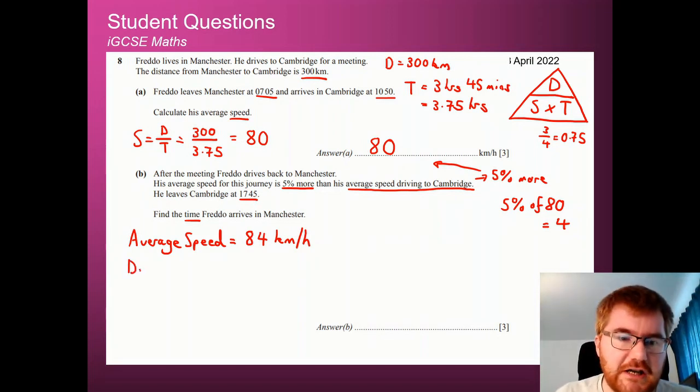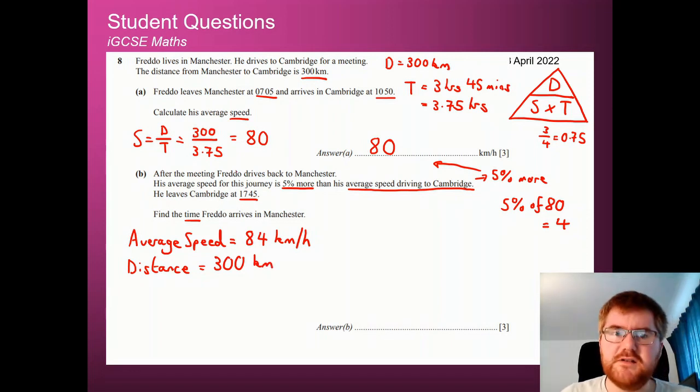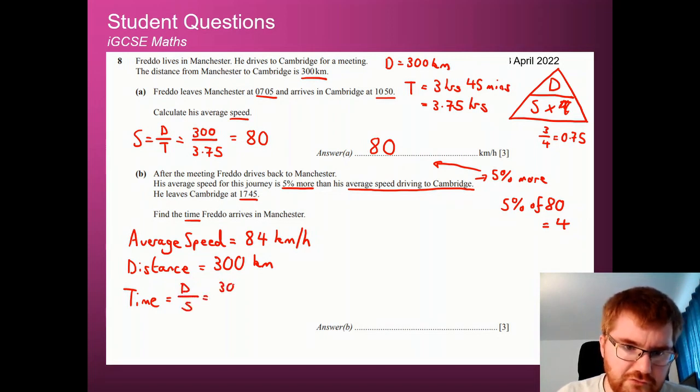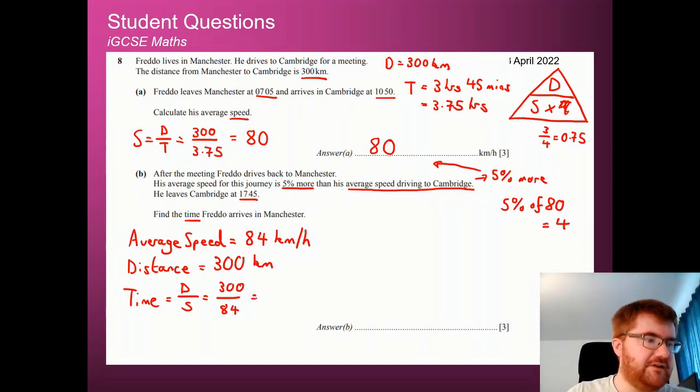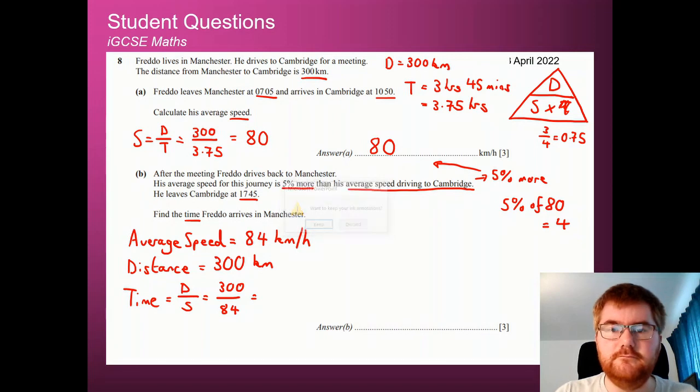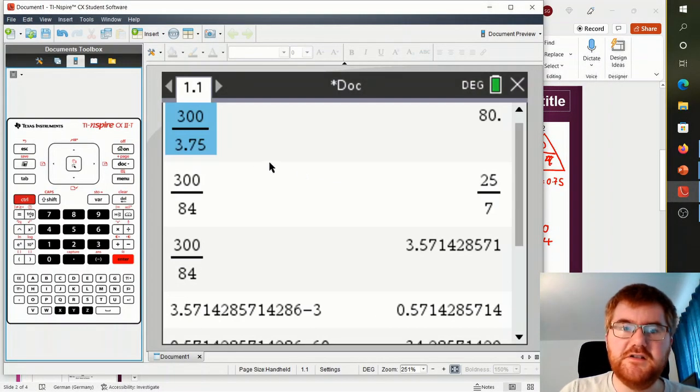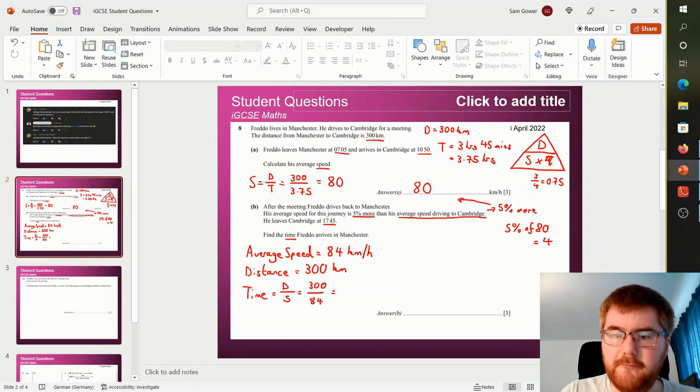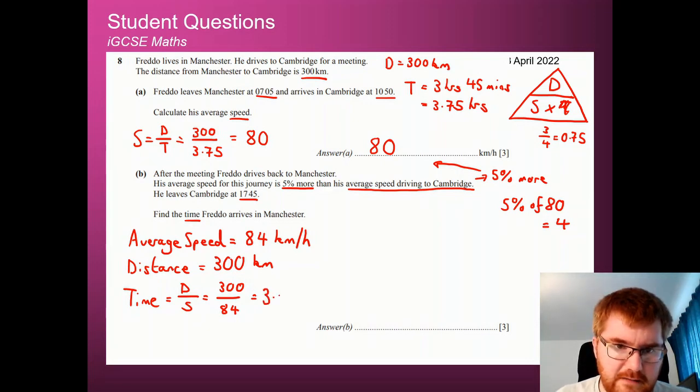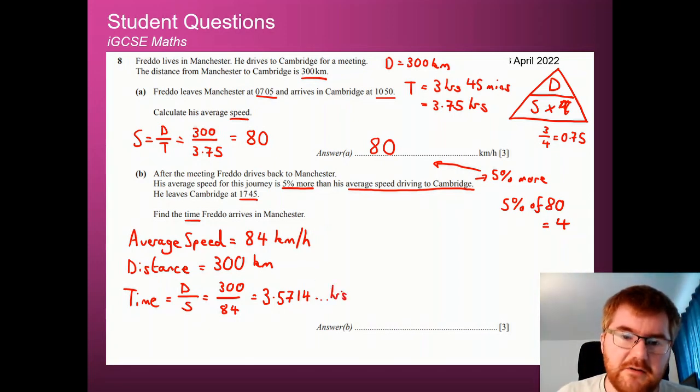And we still know the distance hasn't changed between Cambridge and Manchester. That is still at 300 km. So to work out the time taken, I'm going to use my formula triangle over here. So no more time. So we're going to do distance divided by speed. So that's going to be 300 divided by 84. Now let's go to my calculator and work this out. So you can see I've already worked this out. So 300 divided by 84 is equal to 25 over 7, which as a decimal is 3.5714. So I'm going to write in 3.5714. However, this is just in hours. So what we need to do here is convert this into hours and minutes.